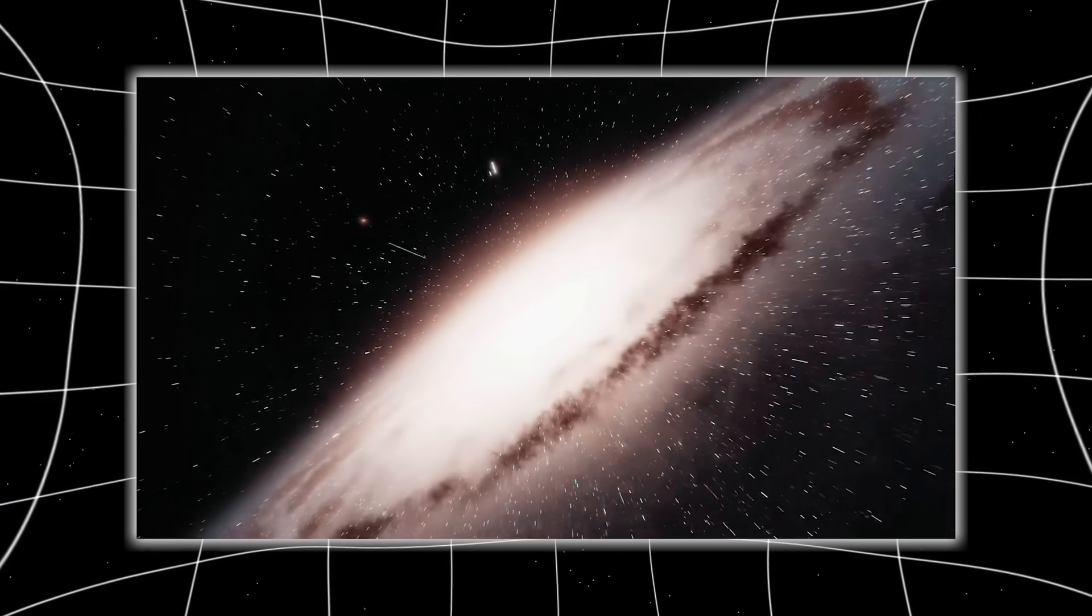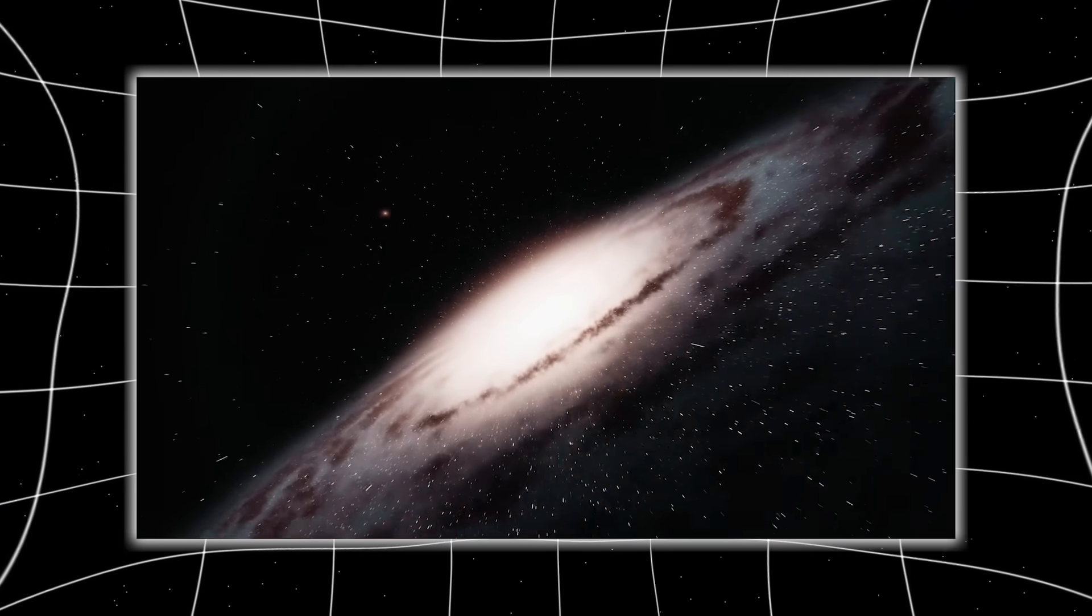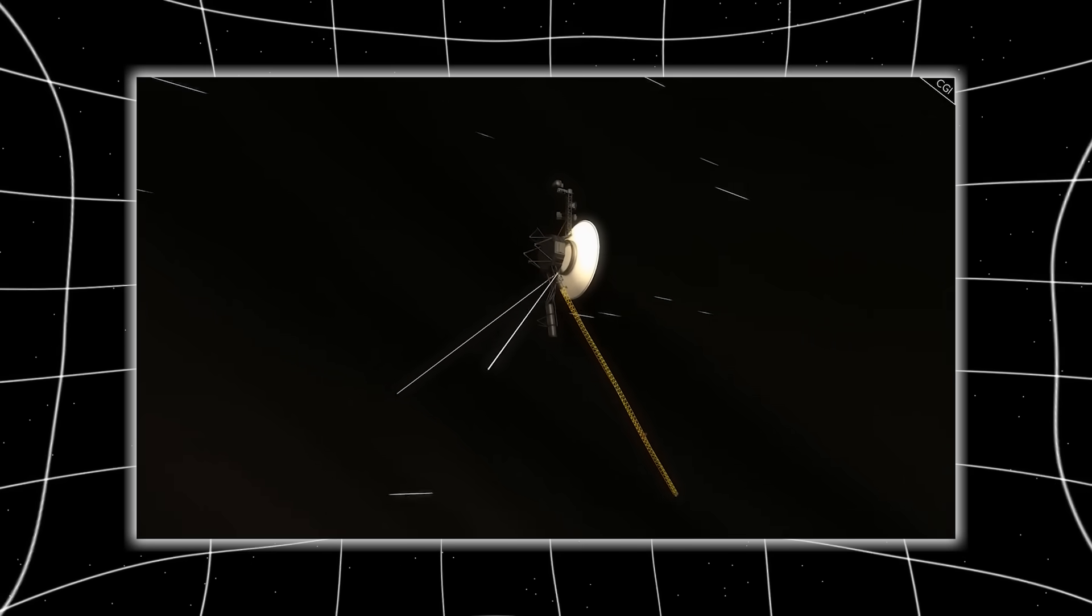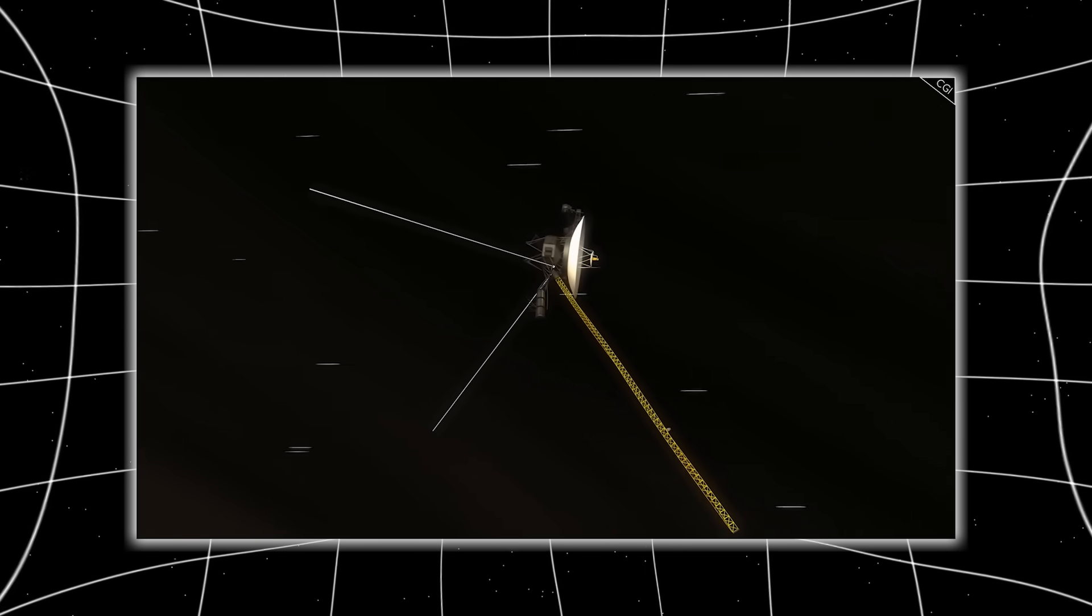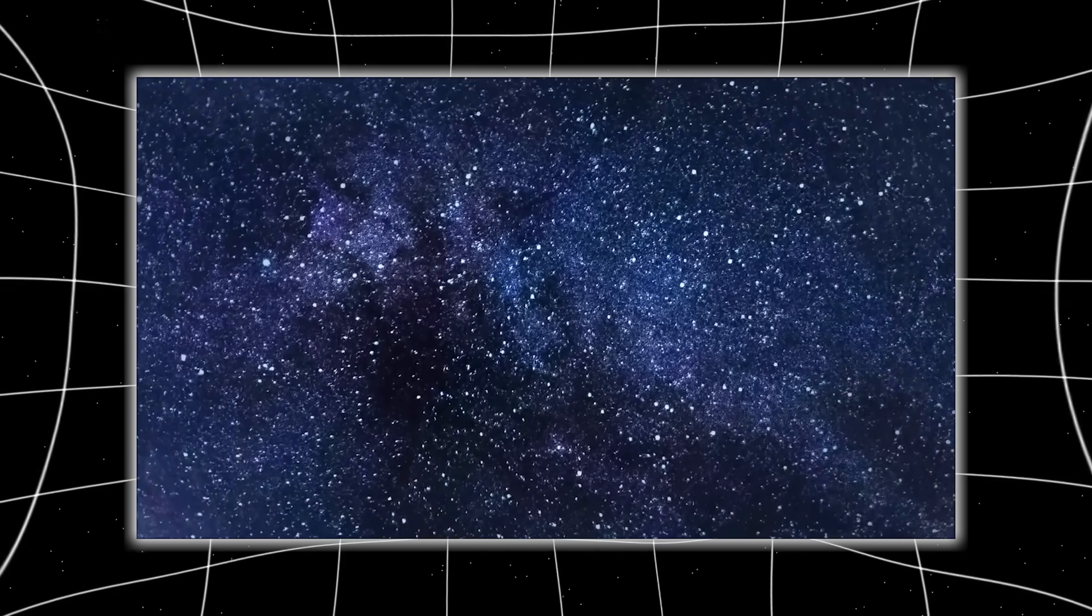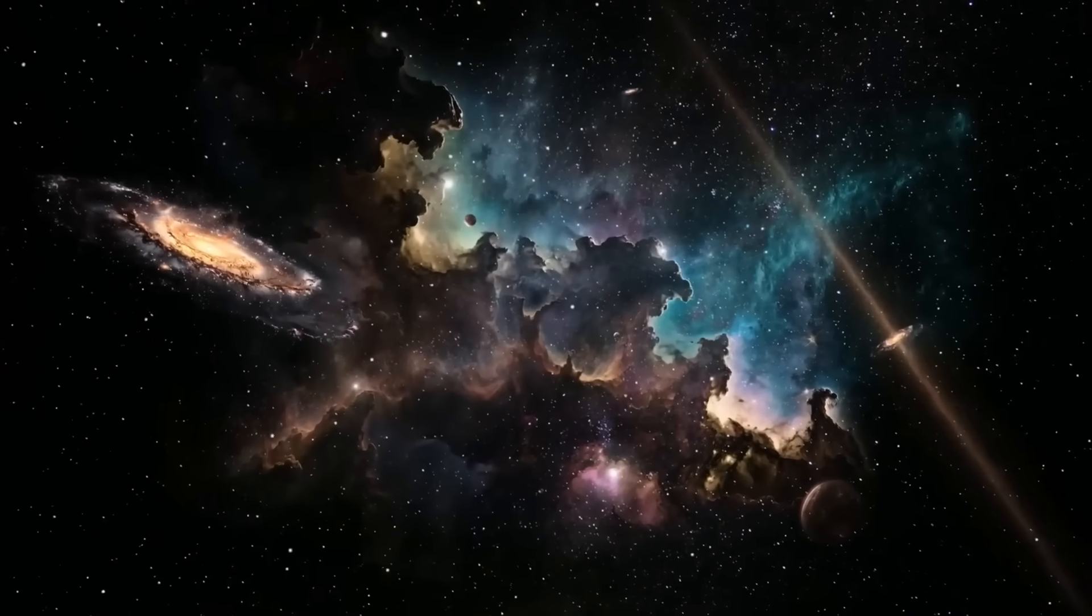NASA's models couldn't explain it. The simplest conclusion, that the probes hadn't actually left the sun's influence, raised an even bigger question. What, then, is really out there? Was the heliosphere not a bubble at all, but a barrier? And if so, what was on the other side, pressing back?